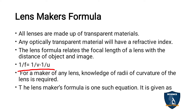The Lens Formula is used to find the relationship between object and image positions. When you place an object at some position, you can see the image. The formula gives us the object distance and image distance from the lens.